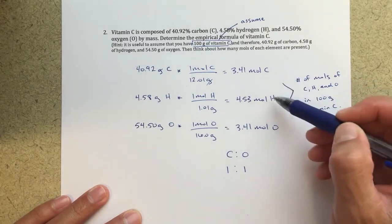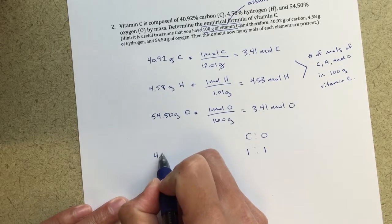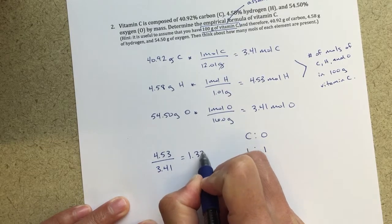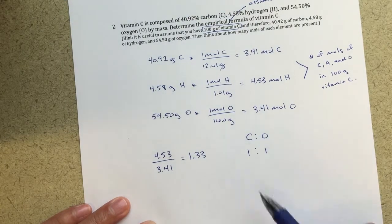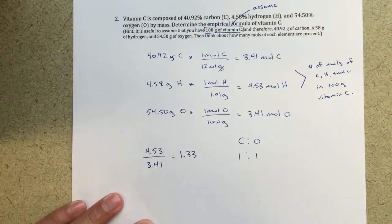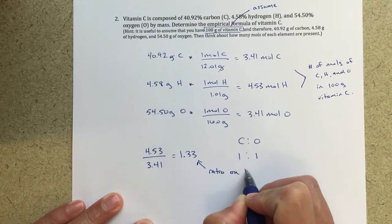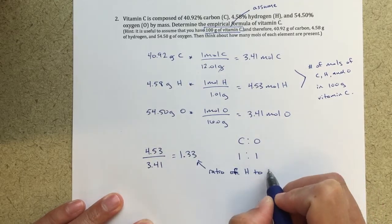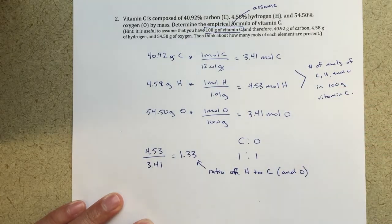The easiest way to do this is calculate the ratio of 4.53 over 3.41. This equals 1.33. This ratio tells me that for every one carbon atom, I have 1.33 hydrogen atoms. That's what this calculation shows. I'll annotate this as the ratio of hydrogen to carbon, and by extension to oxygen, because carbon and oxygen have a one-to-one ratio.